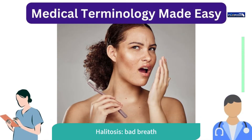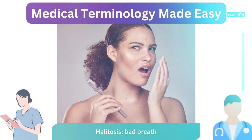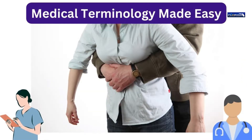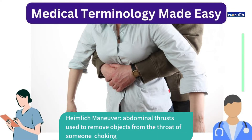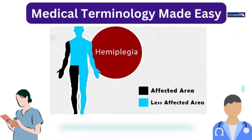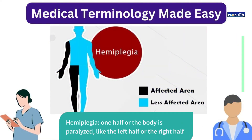Halitosis: bad breath. Heimlich maneuver: abdominal thrusts used to remove objects from the throat of someone choking. Hemiplegia: one half of the body is paralyzed, like the left half or the right half.